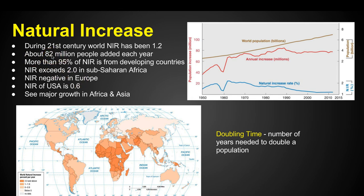More than 95% of the natural increase is from developing countries, meaning there isn't necessarily a lot of growth in the United States or in Europe. The growth is all happening in countries that are still developing, because they're getting technologies and medicines and are able to extend their lives, while at the same time they're still developing so people are having lots and lots of kids.